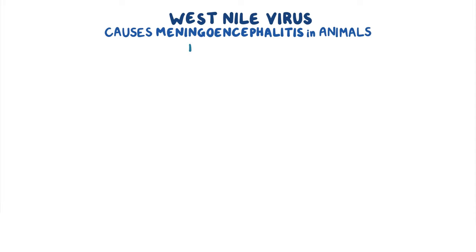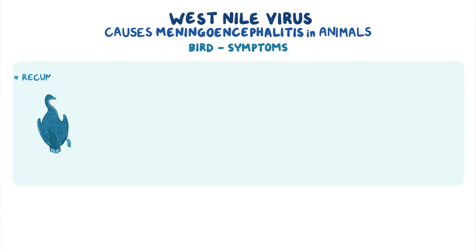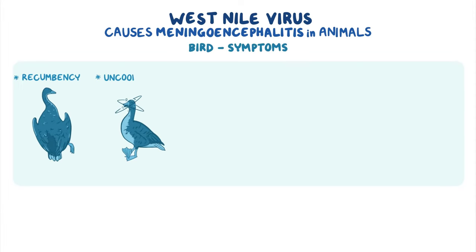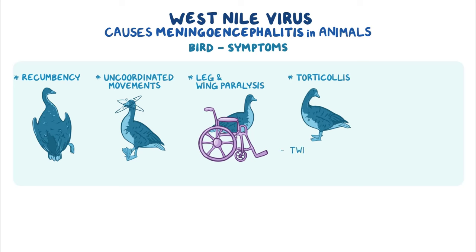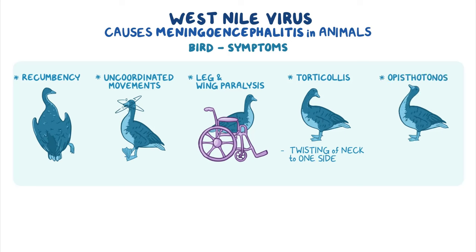Similarly, infected birds also show symptoms like recumbency, uncoordinated movements, and leg and wing paralysis. Some birds may also show torticollis, which is the twisting of the neck to one side, and apostatinus, which is an extreme arching of the neck and back caused by muscle spasms.